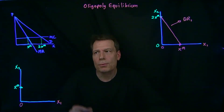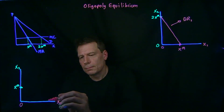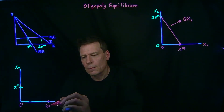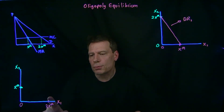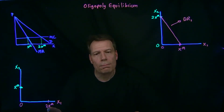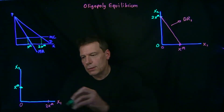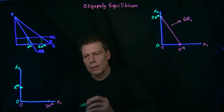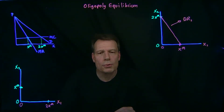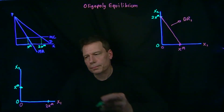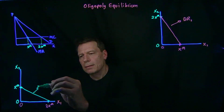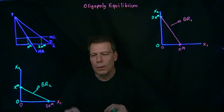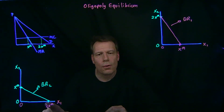But if firm 1 produces twice the monopoly quantity, it will have driven price to marginal cost, and there's no more room for firm 2 to produce anything. So firm 2's best response to firm 1 producing twice the monopoly quantity is to produce 0. Now we have a second point on firm 2's best response function. We can connect those, and that will be the best response for firm 2 to any quantity that firm 1 might produce.